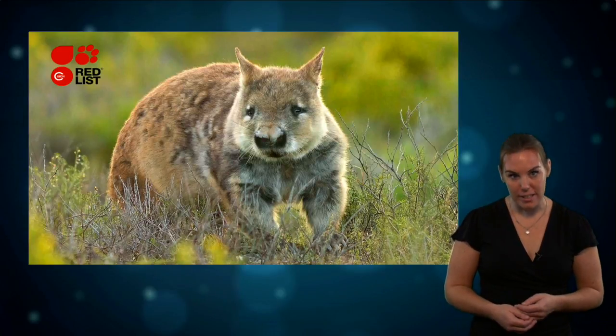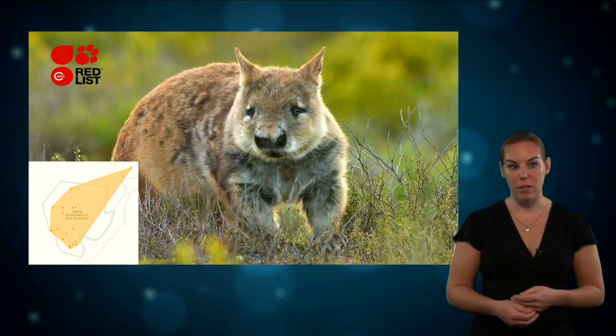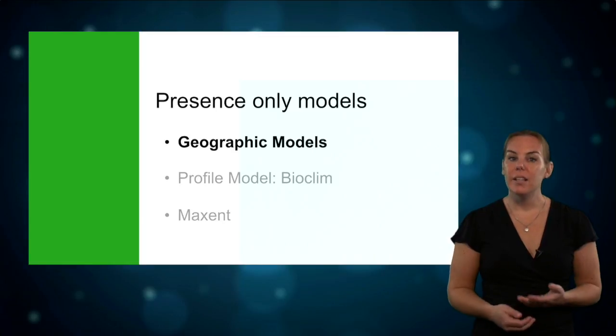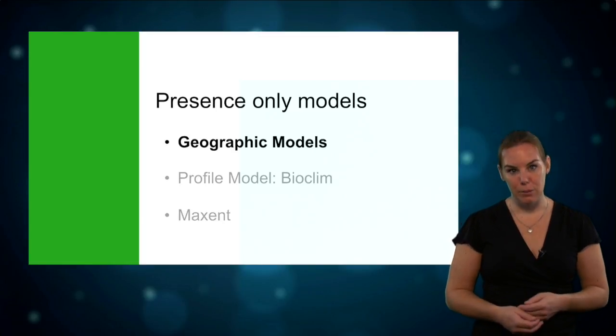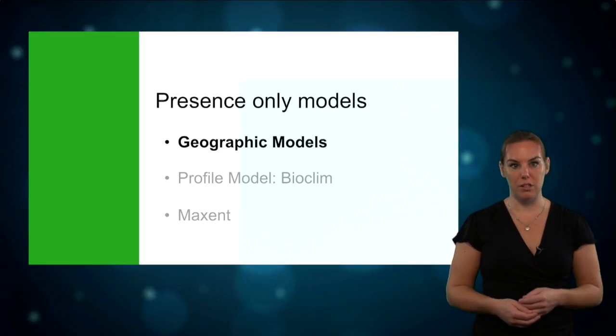In Australia, the northern hairy-nosed wombat is an example of a critically endangered species. Its range is restricted to a 3 square kilometer extent within the Epping Forest National Park in Queensland. These geographical models are easy to understand and interpret, but they are not very often used because they don't take into account the environmental conditions that regulate or influence a species.